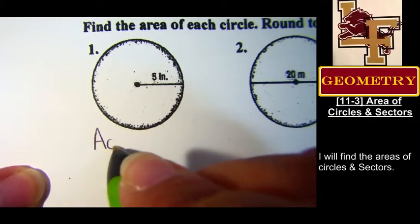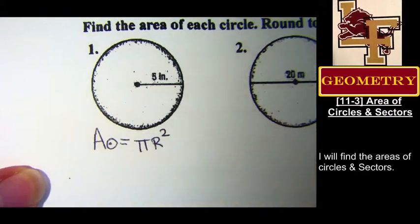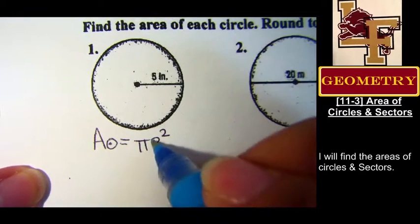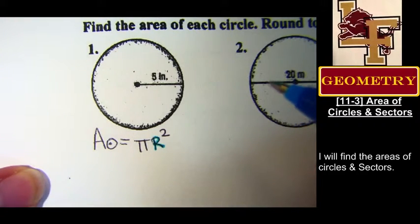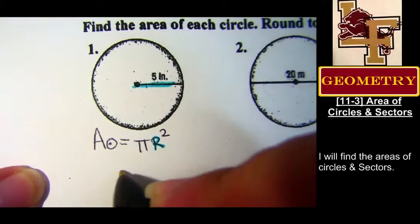Area of the circle is? We just wrote it on our notes. Pi r squared. Lovely. What's the radius? Five. Yeah, five. Right there. Cinco.